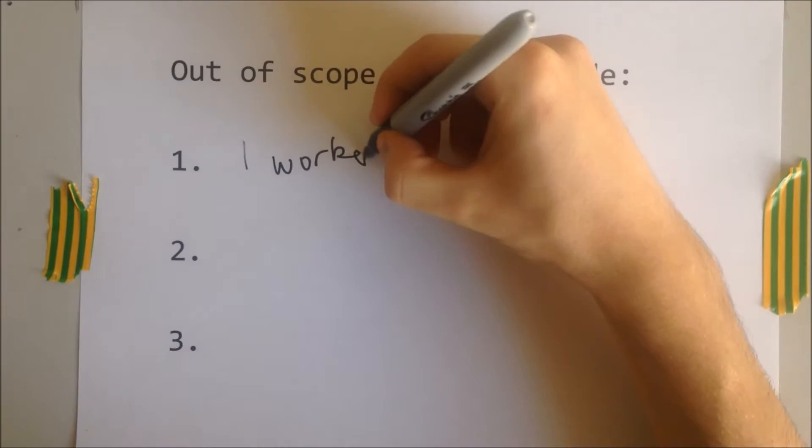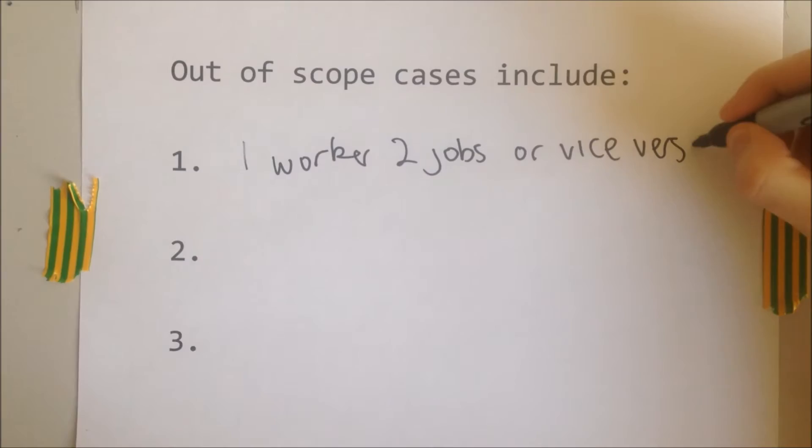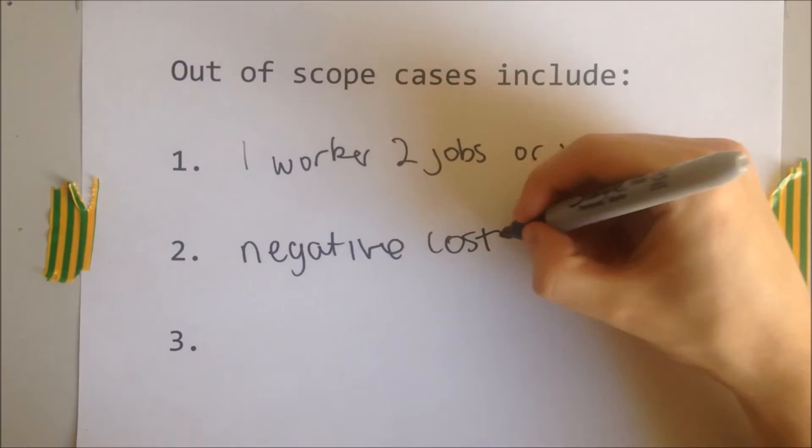An assumption we make is that there is a one-to-one relationship between workers and jobs. The algorithm will not work if we want to assign one worker to two jobs or vice versa. Also, all costs must be non-negative and the matrix must be n by n.